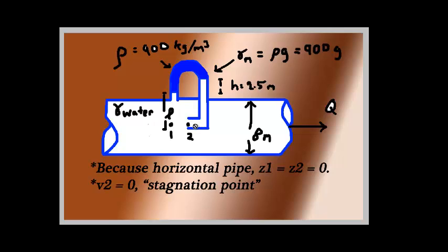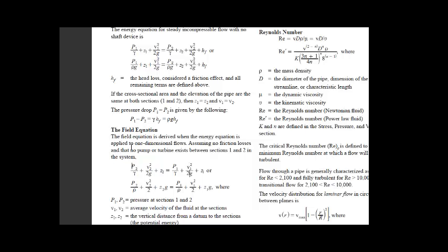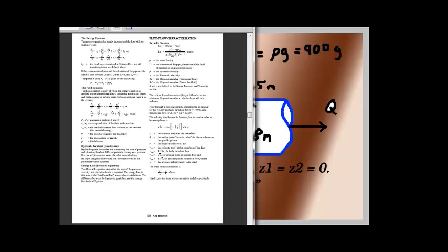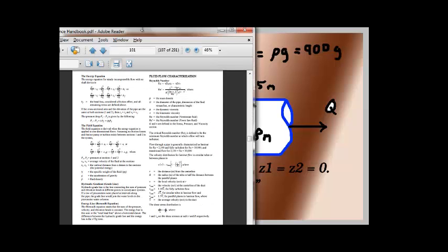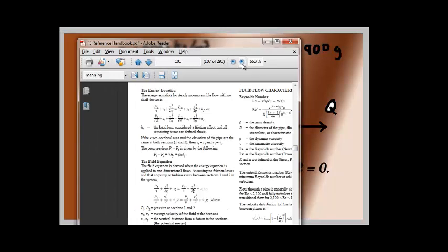Also, V2 is equal to 0, the stagnation point. And if you see an entrance, the point is at the entrance of this pipe, then that's called a stagnation point, which means the velocity there is equal to 0 because of some property of fluid mechanics. Let's show you the equation that we are going to use.